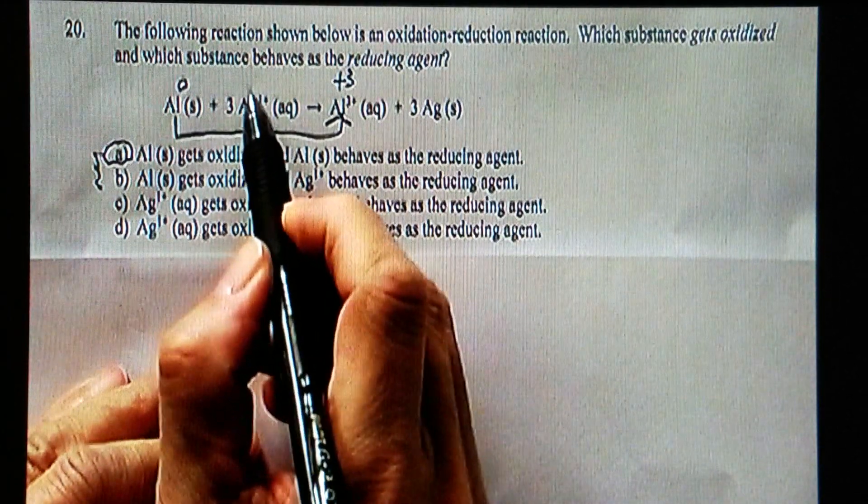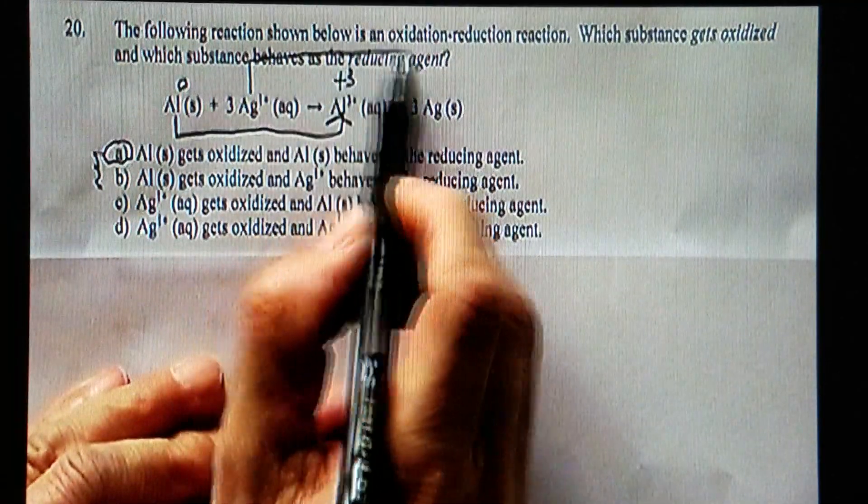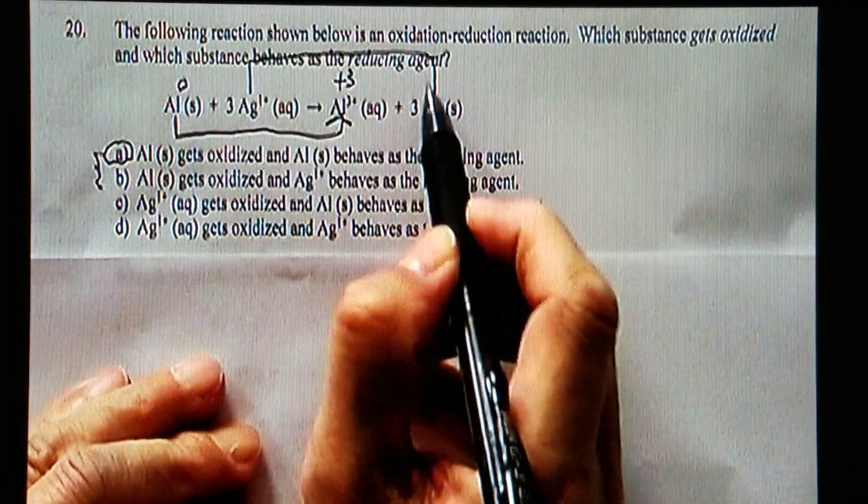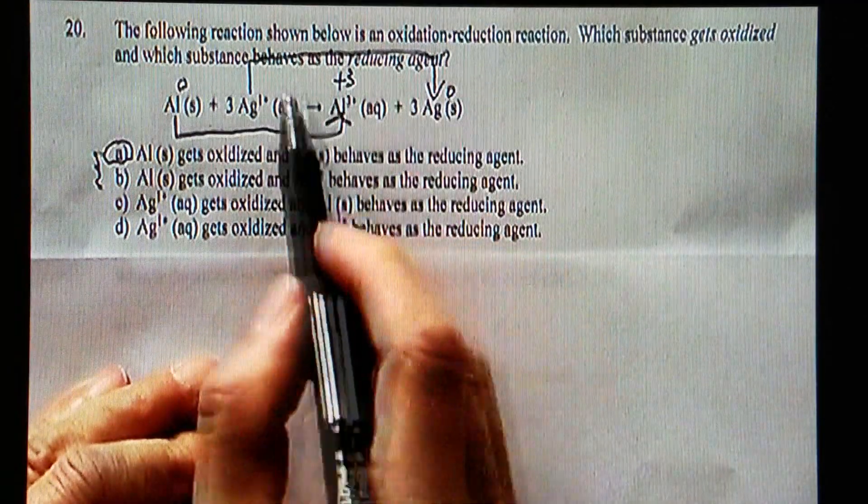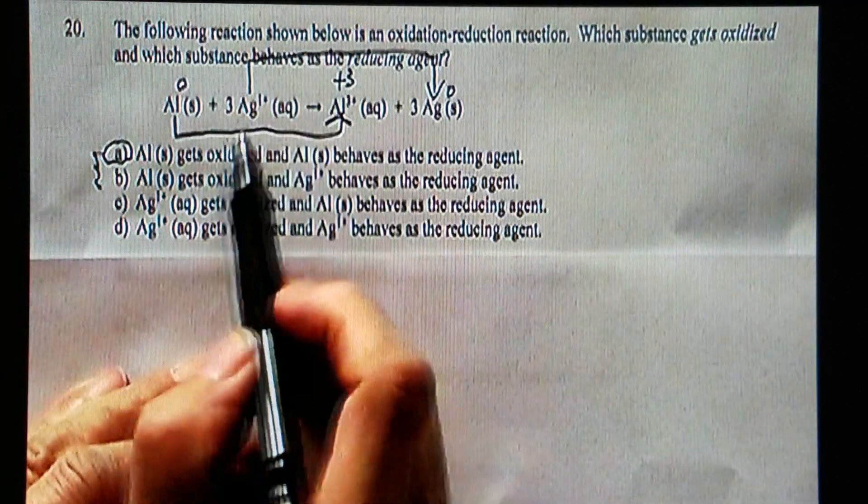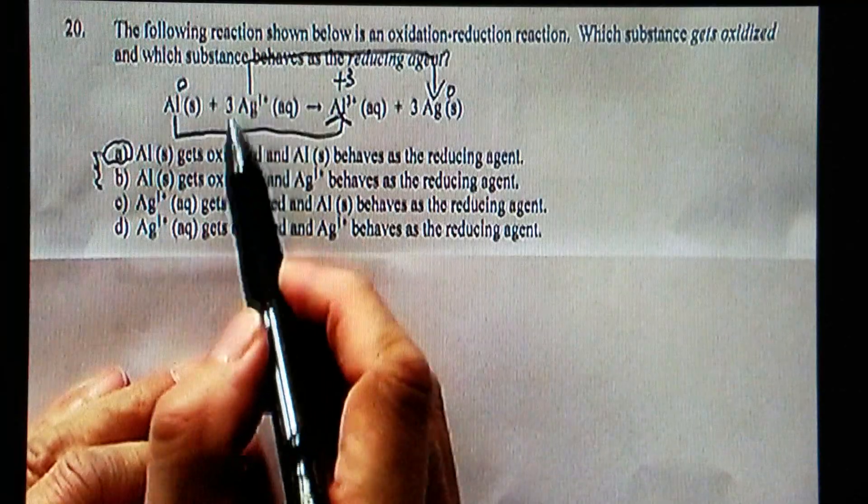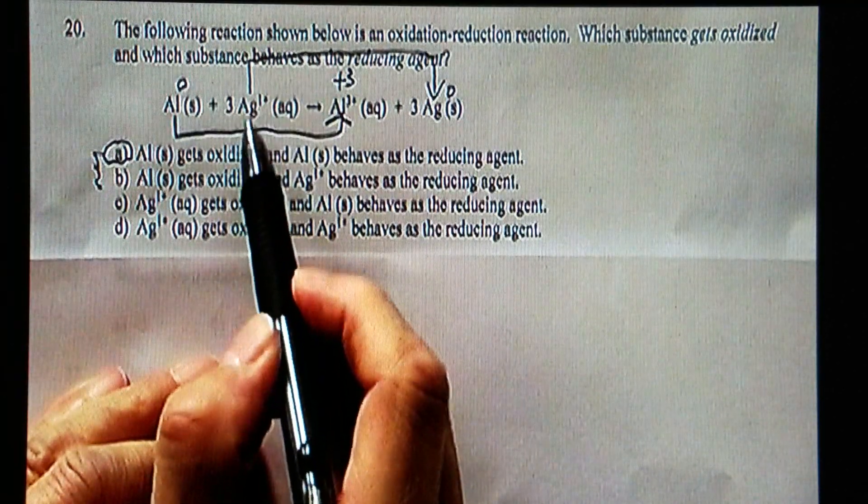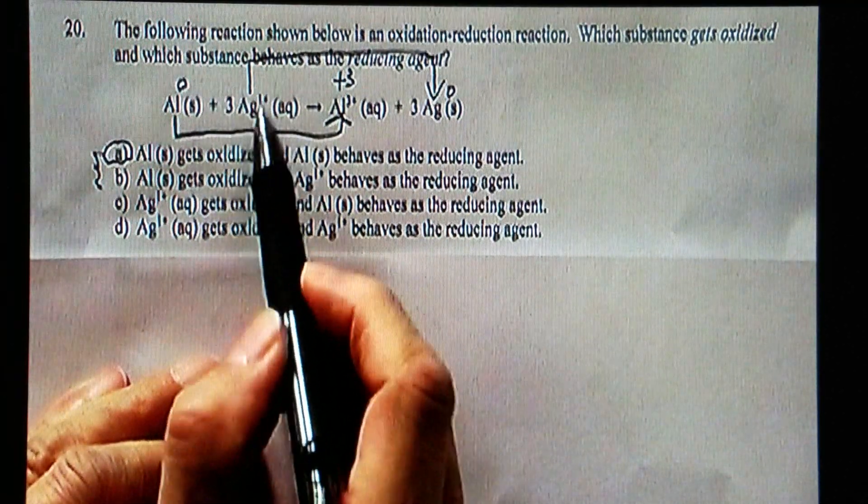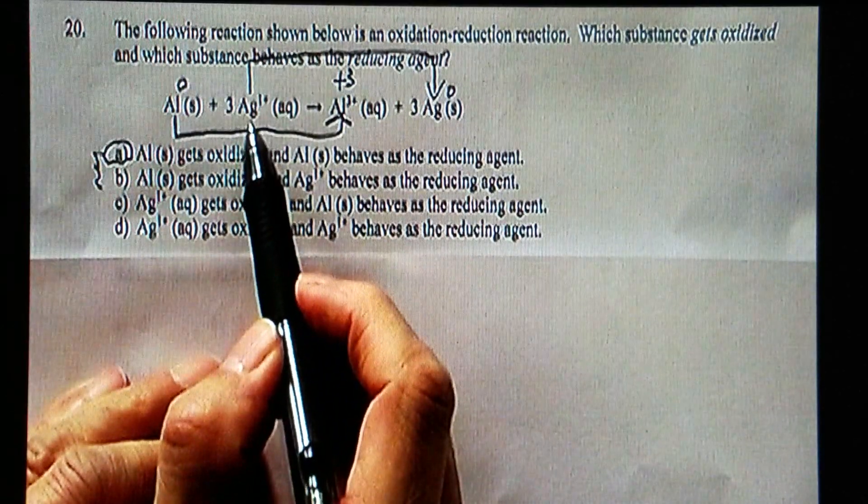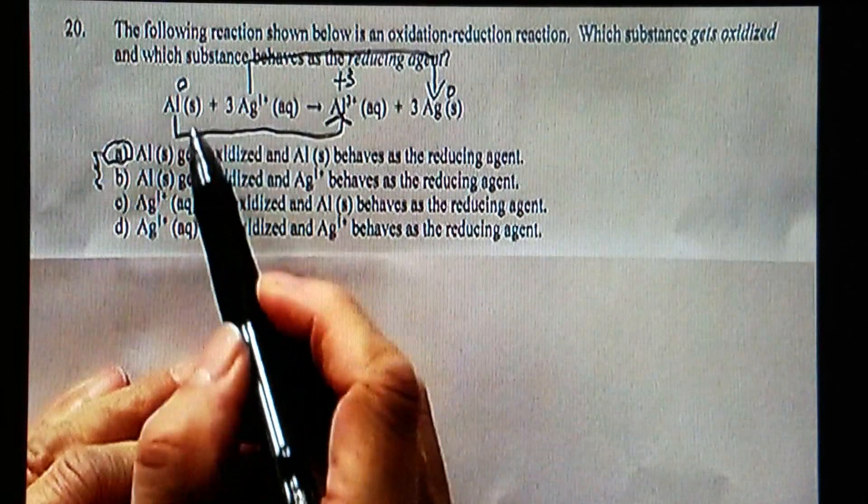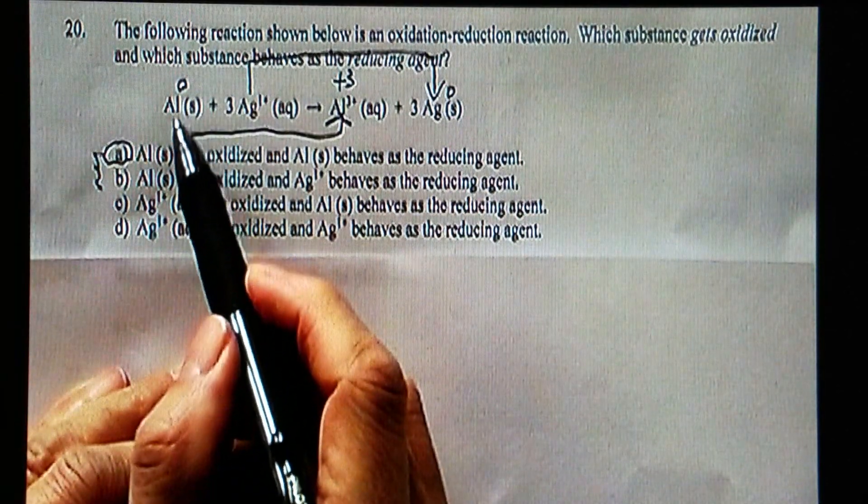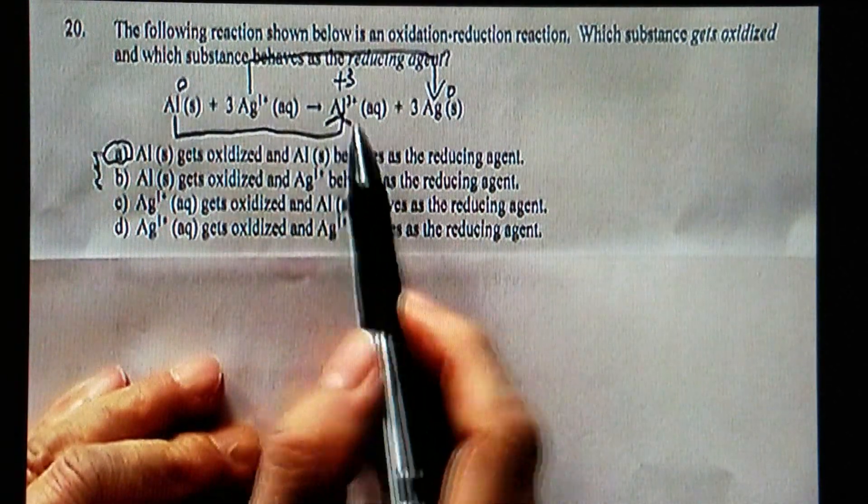Then let's look at silver. Here is a plus one, and here is zero. Plus one to zero decrease. So therefore, silver plus gets reduced. If it gets reduced, it is the oxidizing agent. It is silver one plus oxidized aluminum zero, so that is called aluminum zero becomes aluminum three.